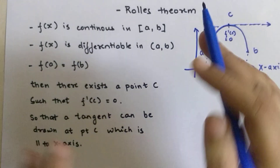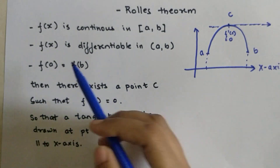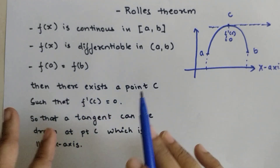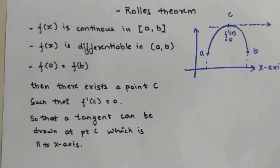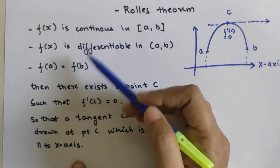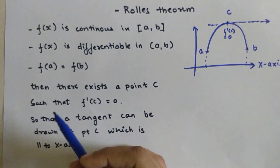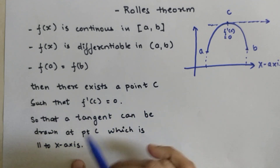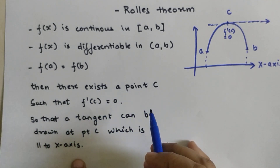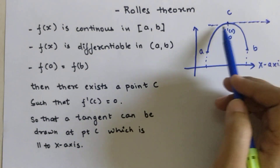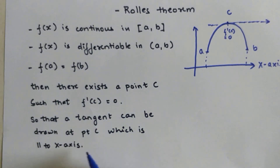From the point of solving your sums, the first two prerequisites will generally be given to you. All you have to do is find f(a) and f(b) and check if they are equal. If all three prerequisites are matched, then there exists a point c such that f'(c) = 0.